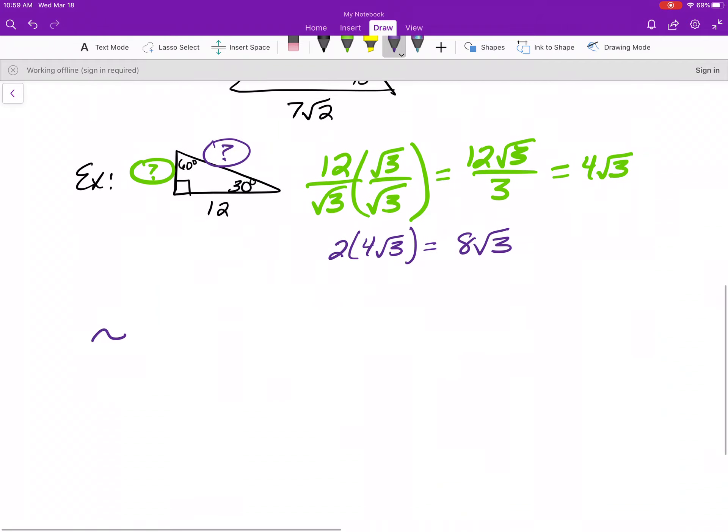Similar triangles. This is a symbol we use in geometry for two triangles or any two shapes that are similar. Similar means same shape, different size. And so you can also set up proportions for similar triangles to find the missing sides. All right. I think that'll do it for your geometry review.